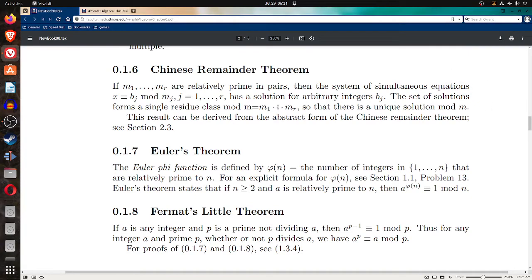Let me read the statements of three big theorems. 0.1.6 Chinese Remainder Theorem. If m1 through m sub r are relatively prime in pairs, then the system of simultaneous equations